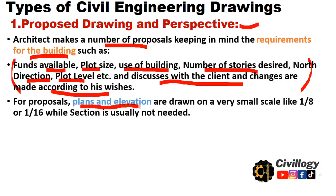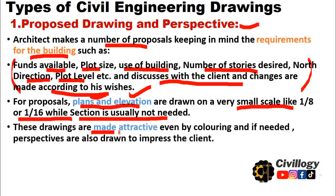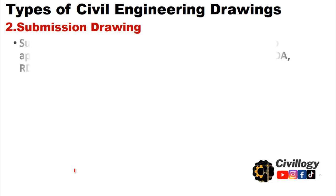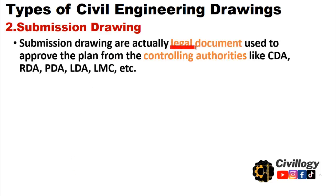For proposed drawings, plans and elevations are drawn on a very small scale, like 1/8 or 1/16. A section is usually not needed at this stage — only plans and elevations are required. These drawings are made attractive, even by coloring, and if needed, perspectives are also drawn to impress the client. Proposals are then discussed with the client and changes are made according to their wishes.